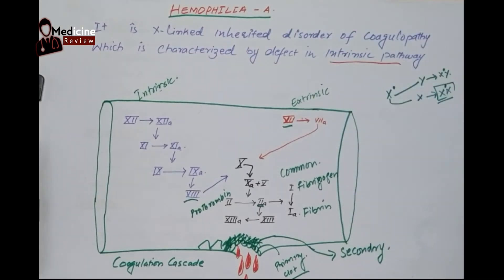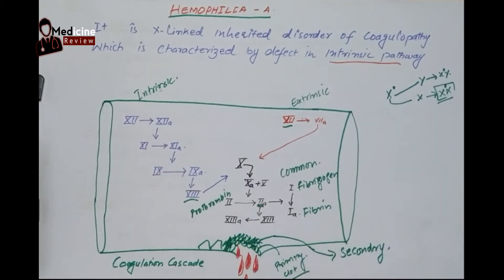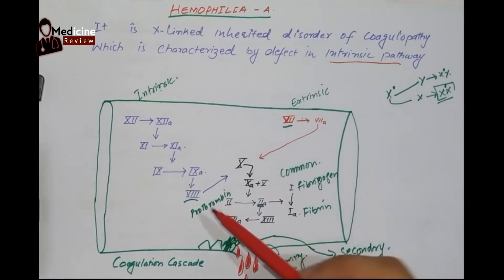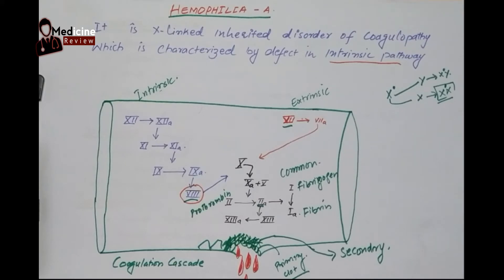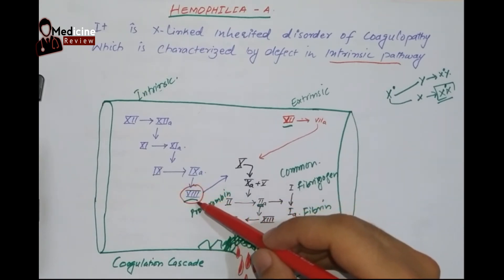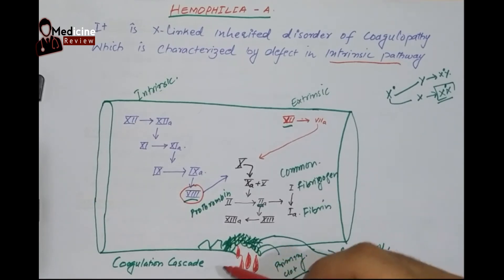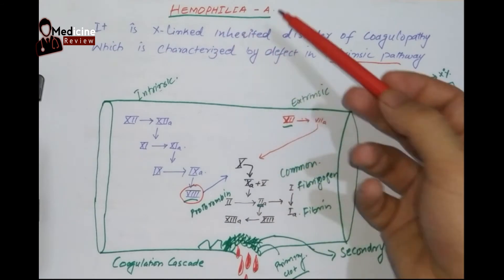Now look at where the defect lies in hemophilia. As we discussed the intrinsic pathway, the problem lies in this pathway. In hemophilia, the factor which is abnormal — either it is a quantitative defect or a qualitative defect — this factor 8 will be abnormal or its quantity is reduced. In the absence of factor 8, this pathway will not be completed, so the blood will not be stopped. This whole situation is called Hemophilia A.